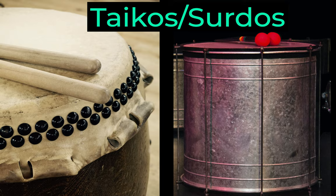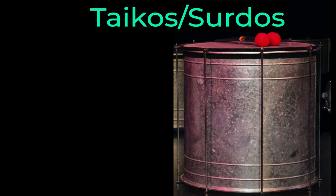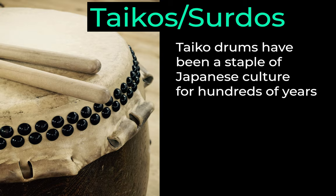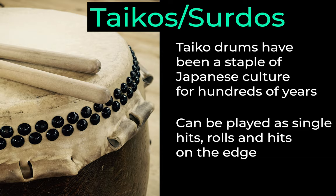Within the last 20 years or so, additional drums including surdos and taiko drums have been used extensively in film music, thanks partly due to composers such as Hans Zimmer making them popular in scores such as The Last Samurai or Tears of the Sun. Surdos, which originate from Brazilian samba bands, are a lower pitched drum and can be great for adding an additional layer of mid to low-end energy to a percussion section. Taiko drums have been a staple of Japanese culture for hundreds of years. They come in a variety of sizes and have different playing techniques including single hits, rolls and hitting the drums on the edge.